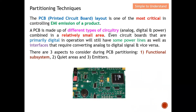A PCB is made up of different types of circuitry — analog, digital, and power — all combined in a relatively small area. Even circuit boards that are primarily digital still have power lines and interfaces that require conversion between analog and digital signals. There are three aspects to consider during PCB partition: number one, partition according to functional subsystem; number two, quiet area; and number three, emitter. Quiet area and emitter will be discussed in the next series.